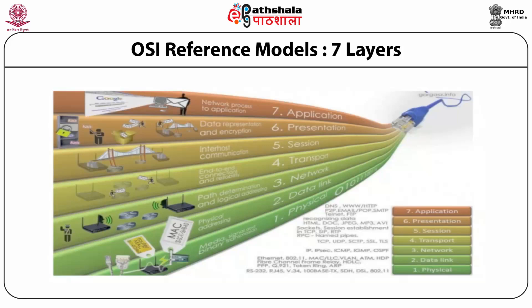The session layer establishes inter-host communication. Then the transport layer takes care of the quality of service of these connections — that is, end-to-end connections. The network layer gives the address of each computer — the IP address — and also decides the path. This is one of the very important layers in the OSI model because it determines the path and resolves the IP address.